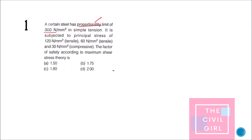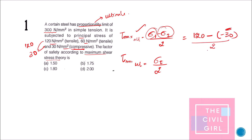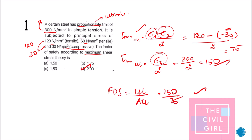Question 1: A certain steel has a proportionality limit of 300 N/mm². The member is subjected to principal stresses; find the factor of safety according to maximum shear stress theory. Allowable shear stress = (sigma_1 − sigma_2) / 2. Sigma_1 = 120 (maximum), sigma_2 = −30 (compressive, so use −30). This gives (120 − (−30)) / 2 = 150 / 2 = 75. The factor of safety is option D: 2.